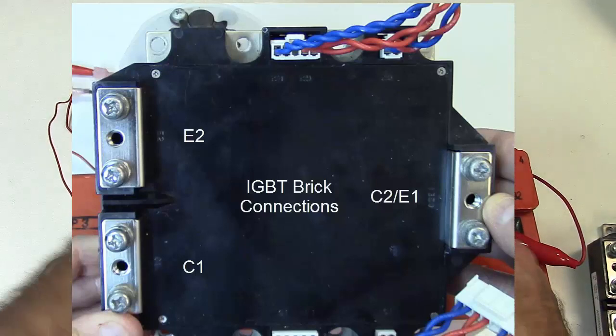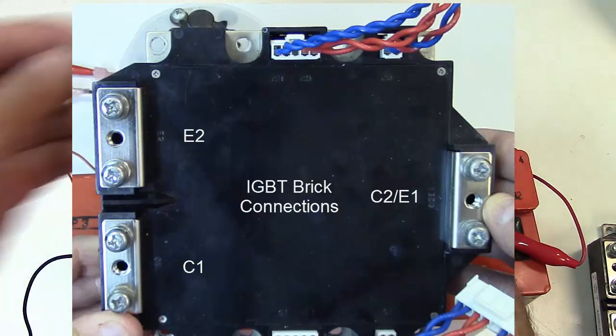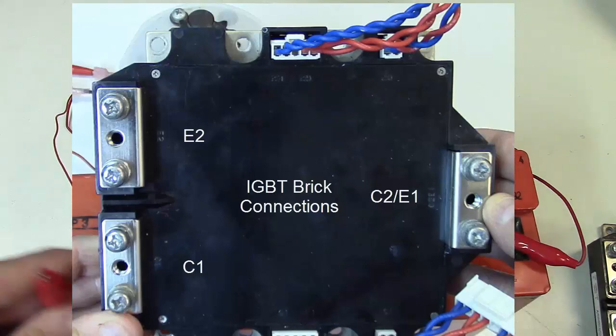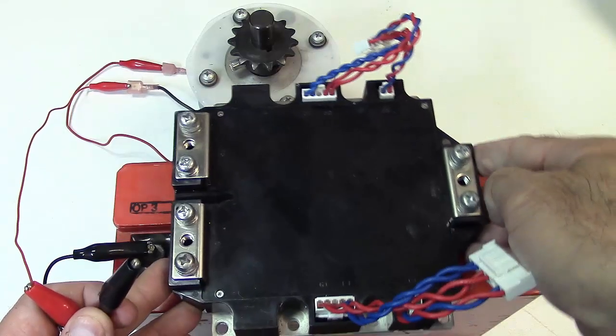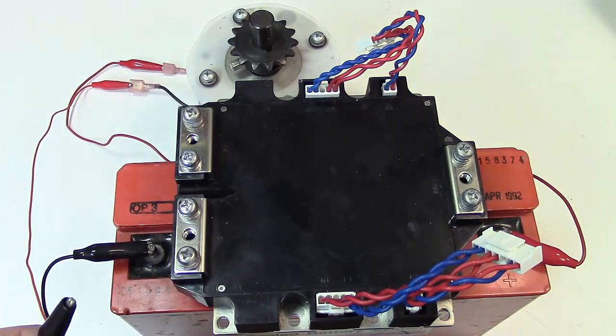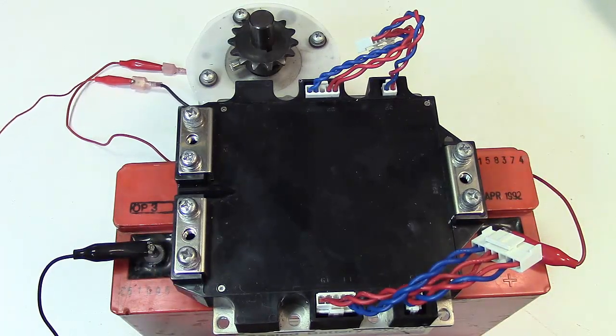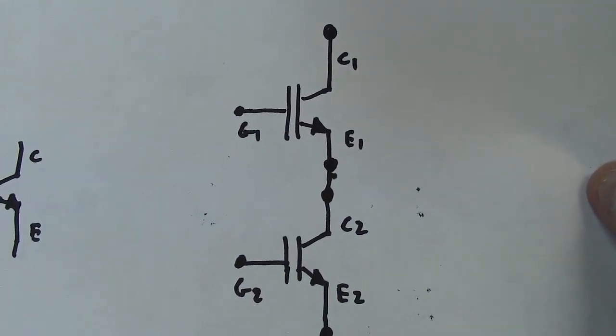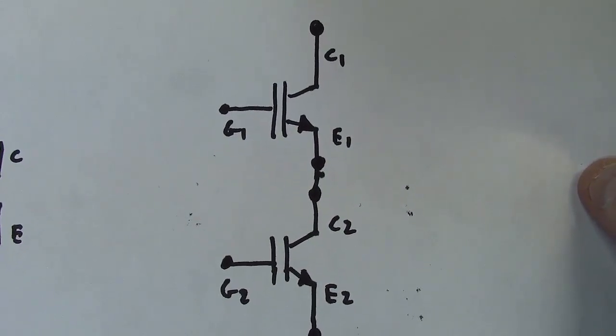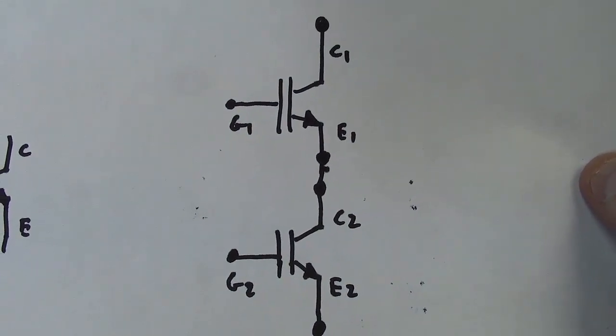So our IGBT has, you've got to be careful here. I don't want to short this out against the battery. So as far as my schematic is concerned, I'm going to check the top IGBT first. So we're going to check the IGBT that has a C1 and an E1.